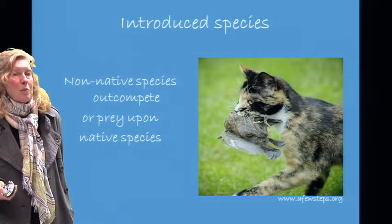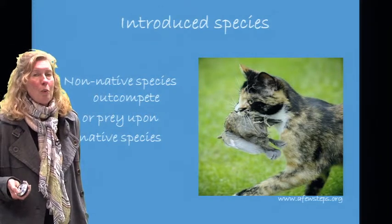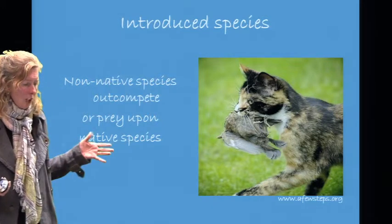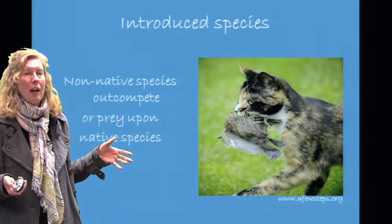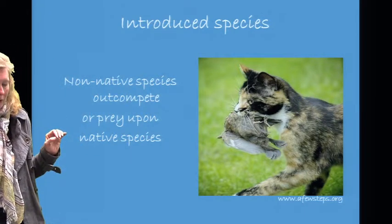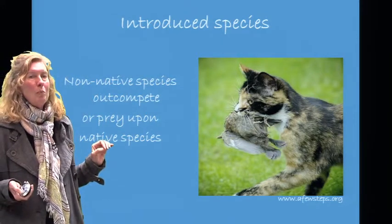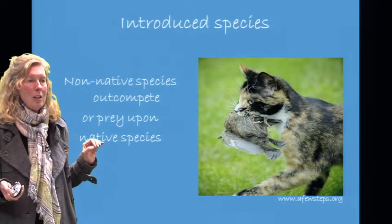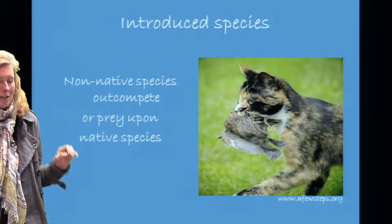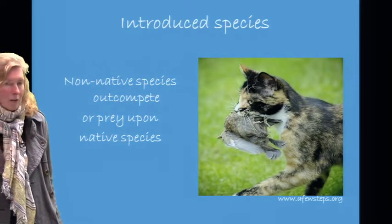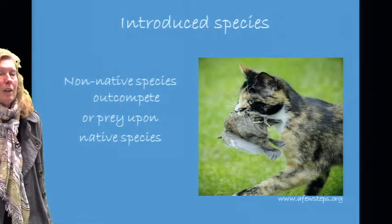Introduced species are generally non-native species that out-compete or prey upon native species. Our free-ranging domestic cat, for example, in the United States alone annually kills up to 4 billion birds and up to 20 billion small mammals. This was reported in Nature in 2013.